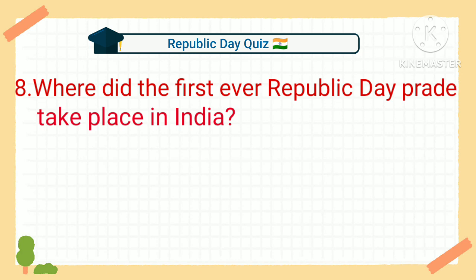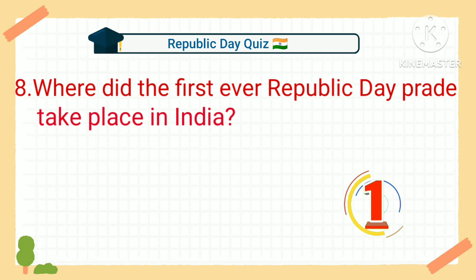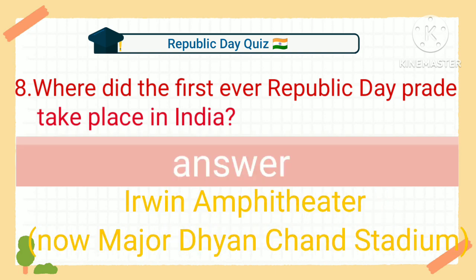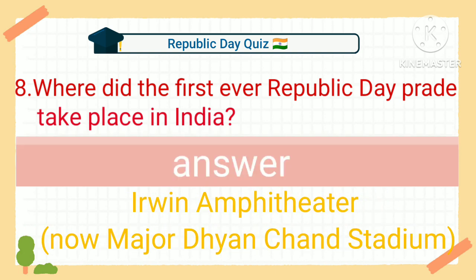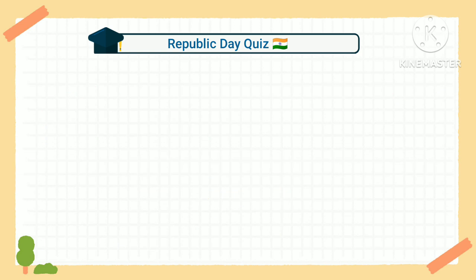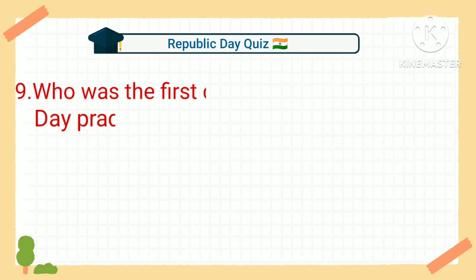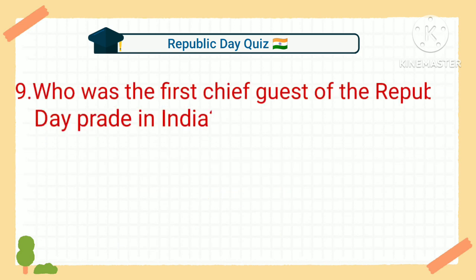Question number eight: where did the first ever Republic Day parade take place in India? Answer: Irwin Amphitheater, now Major Dhyan Chand Stadium. Question number nine: who was the first chief guest of the Republic Day parade in India?